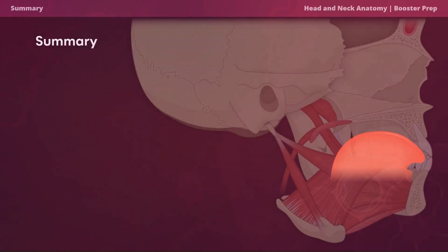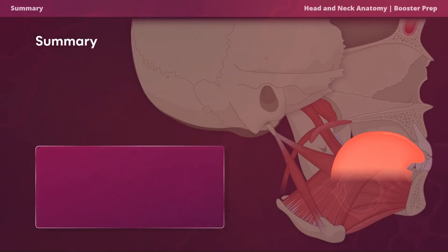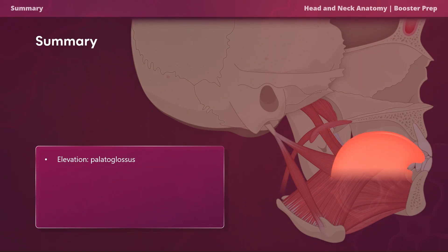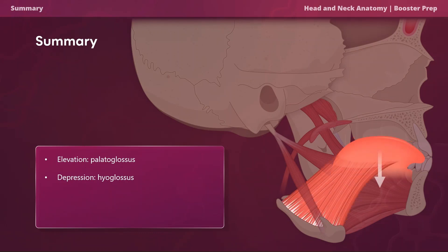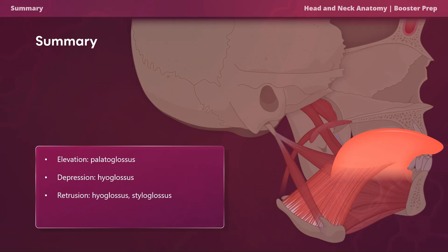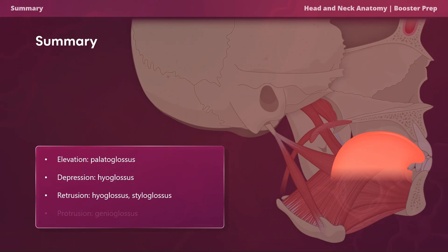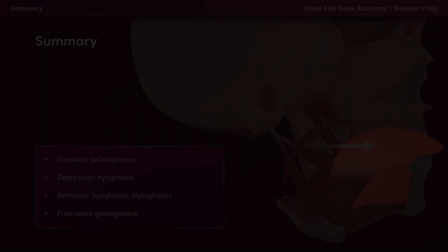To summarize the actions: the palatoglossus elevates the tongue, the hyoglossus depresses and retrudes the tongue, the styloglossus retrudes the tongue, and the genioglossus protrudes the tongue. Thank you so much for watching.